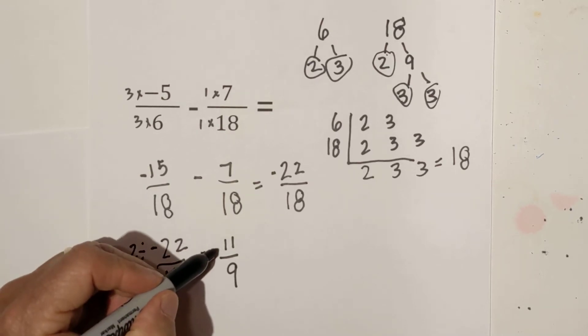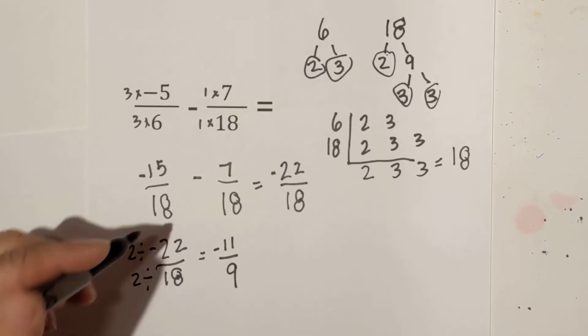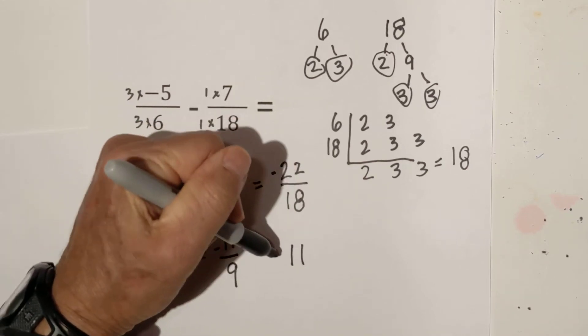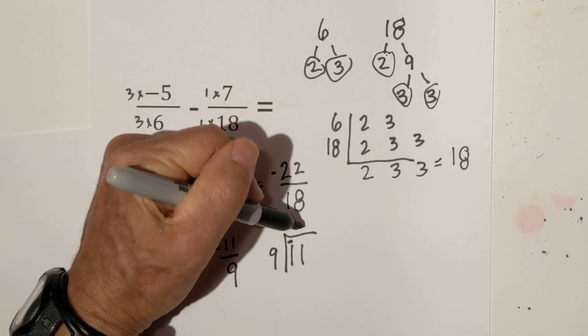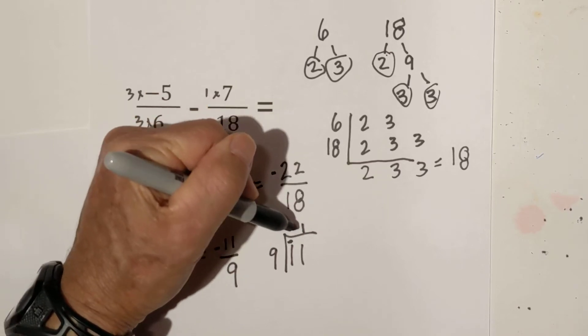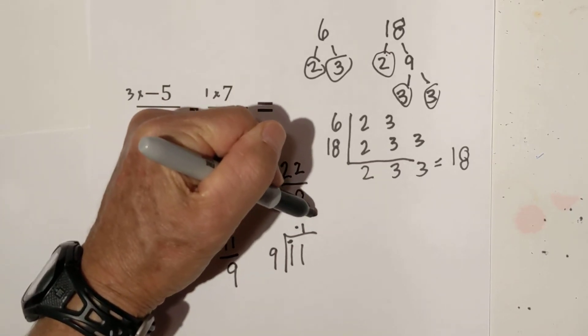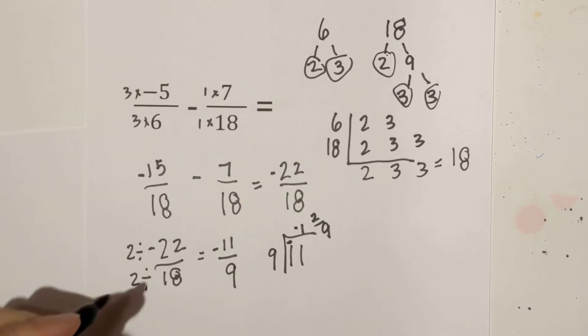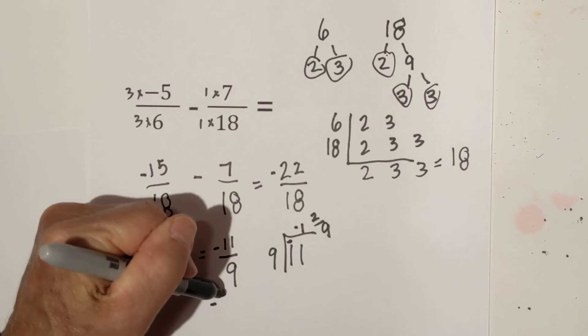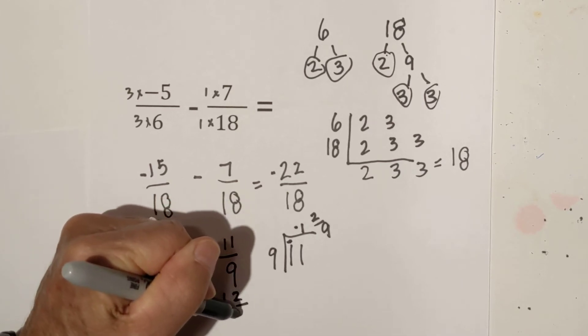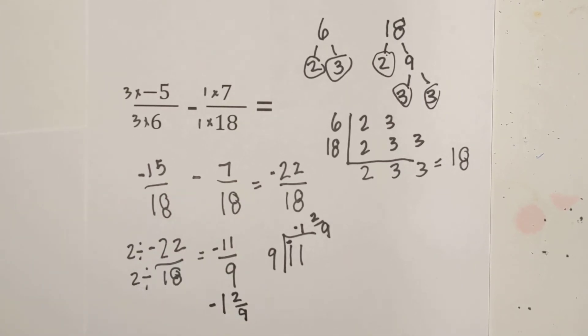We have to keep the sign which is negative. And if you would like you can convert it to an improper fraction. But 9 goes into negative 11 1 times. And then you have 2 ninths left over. So you could either go with negative 11 over 9 or a negative 1 and 2 ninths.